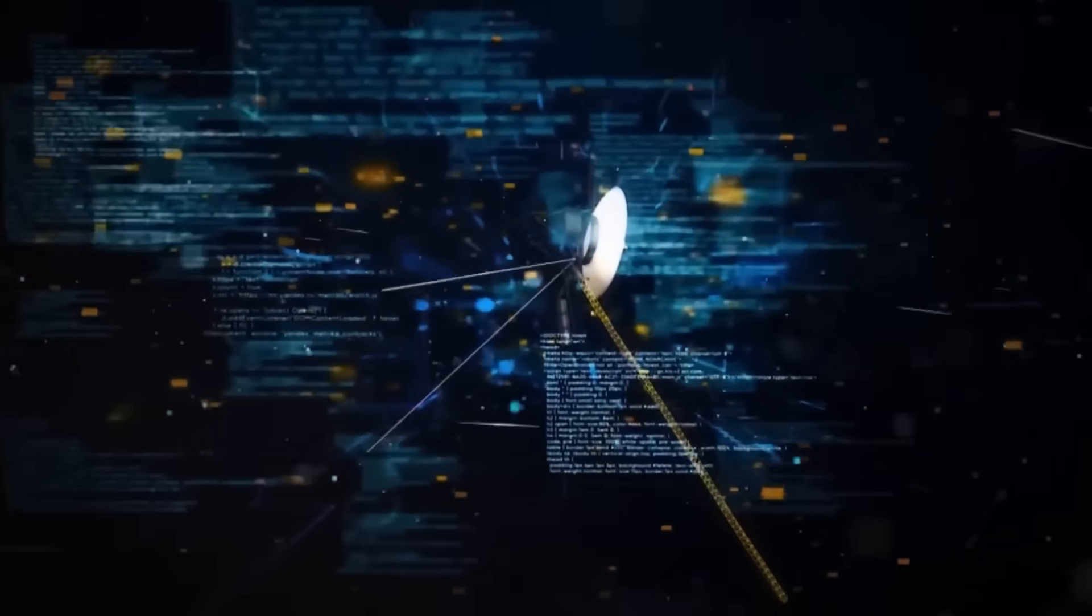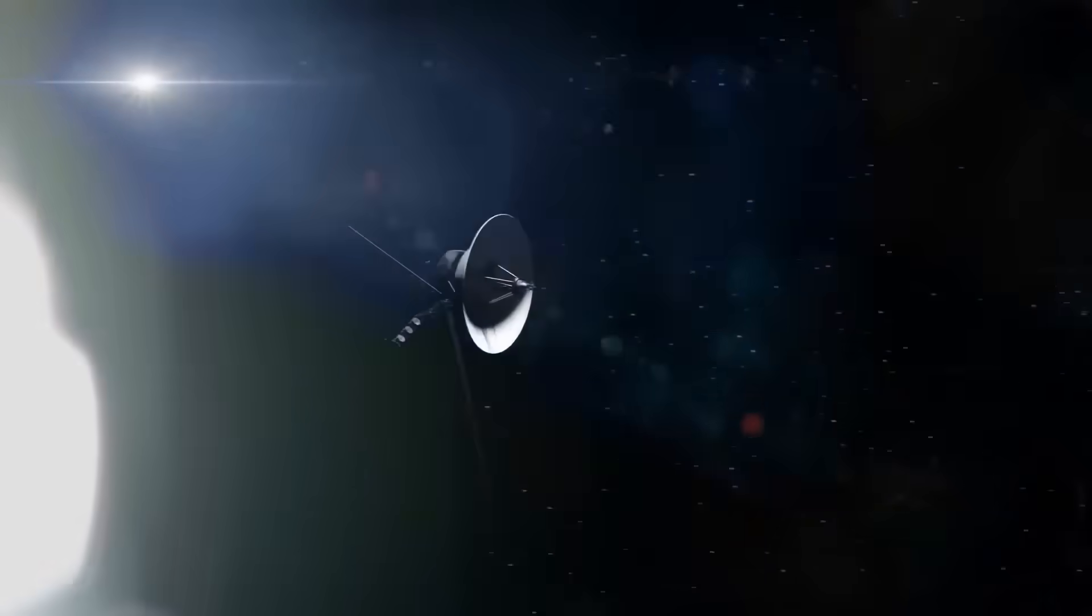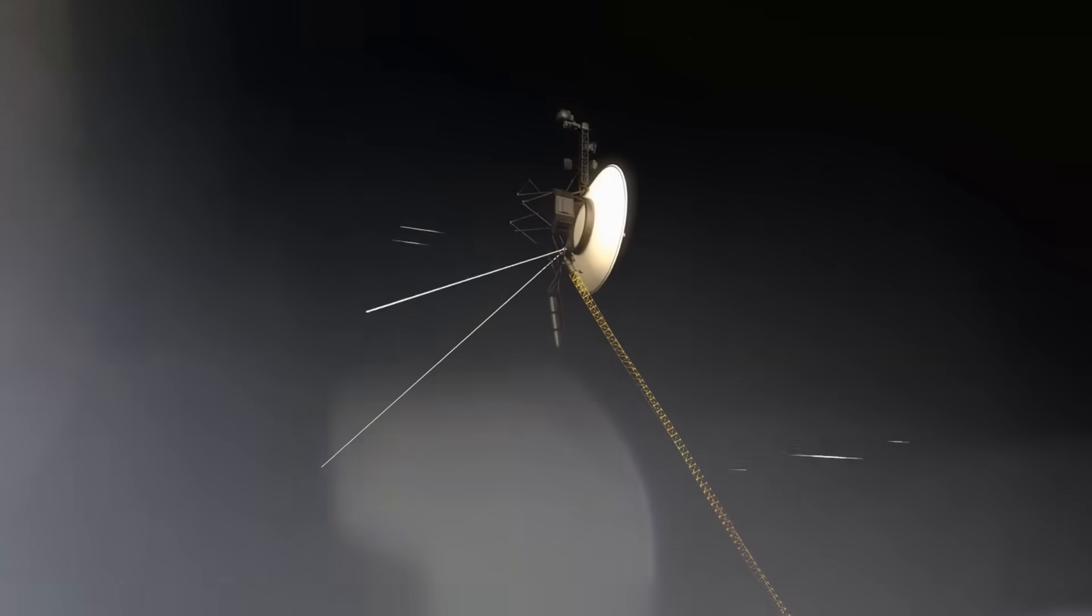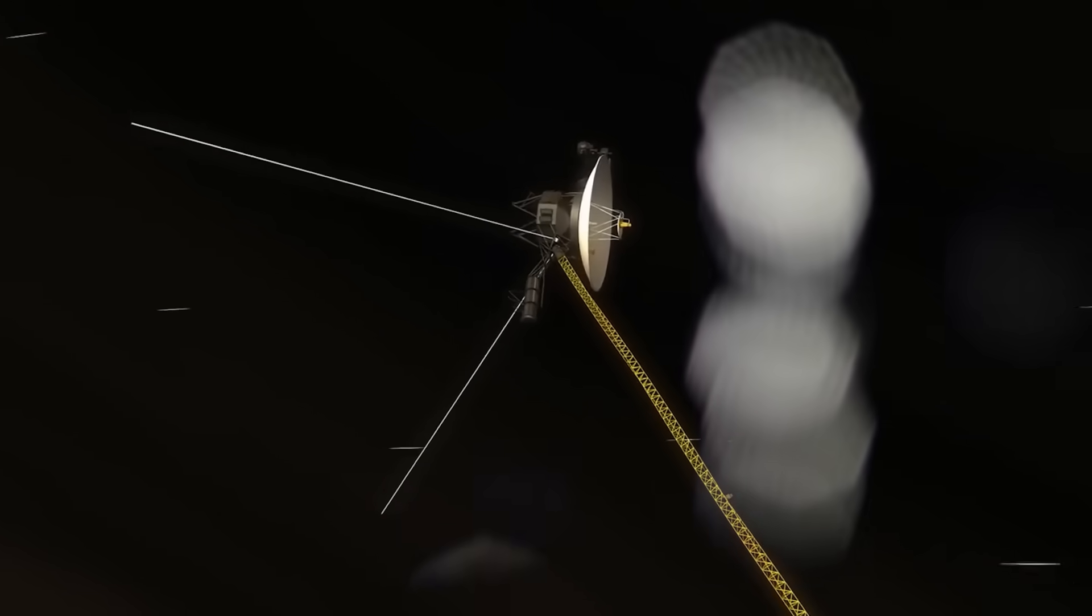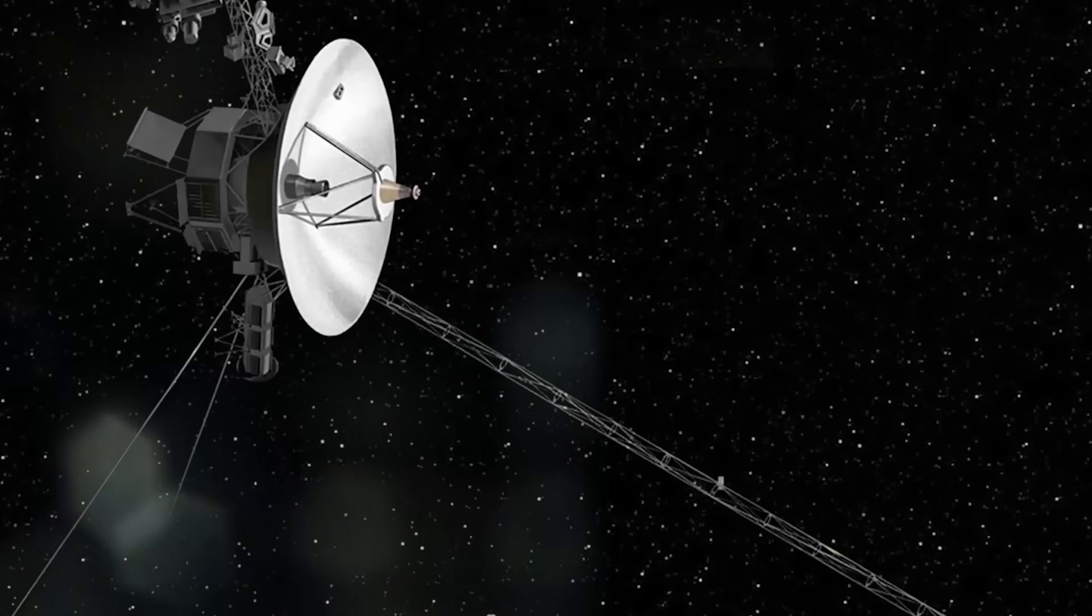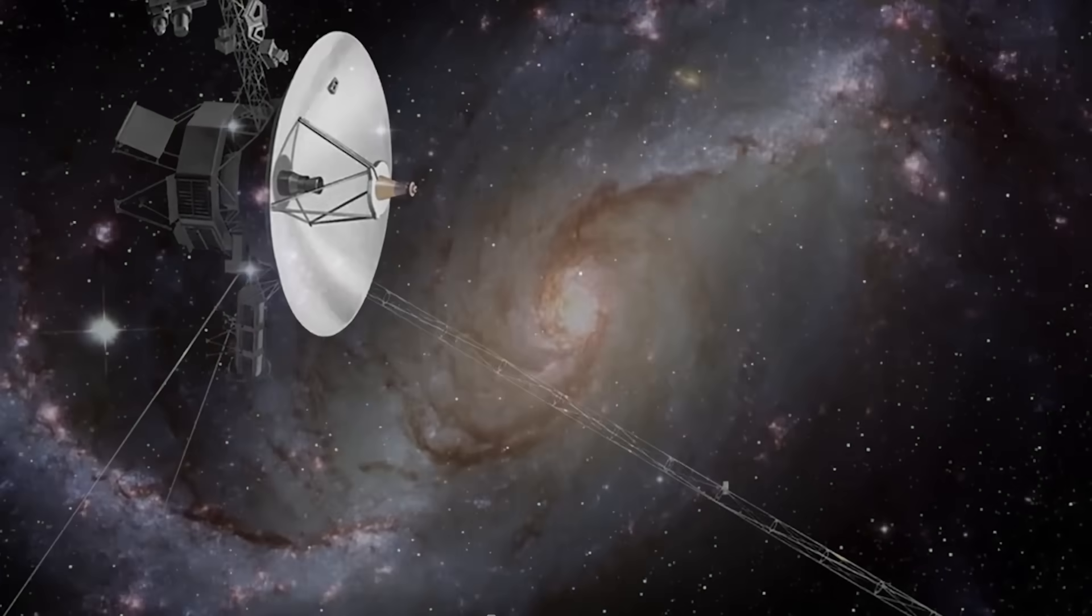In late 2017, Voyager's control team at NASA noticed something deeply troubling. Its antenna, which should have been aligned with Earth, was reporting a misalignment. But the signal strength was perfect. As if the spacecraft was both out of position and yet still precisely locked onto us. It was like hearing someone speak from behind a wall, while watching them stand silently in front of you.